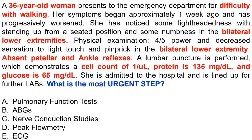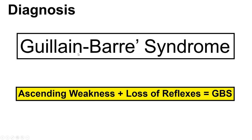With these findings, we need to make the diagnosis first. The diagnosis is GBS — Guillain-Barré syndrome. Ascending weakness plus loss of reflexes is always equal to GBS. Whenever you get a question in the exam about lower extremity weakness with difficulty in walking that ascends toward the upper extremity, and there is loss of reflexes, always think about Guillain-Barré syndrome.